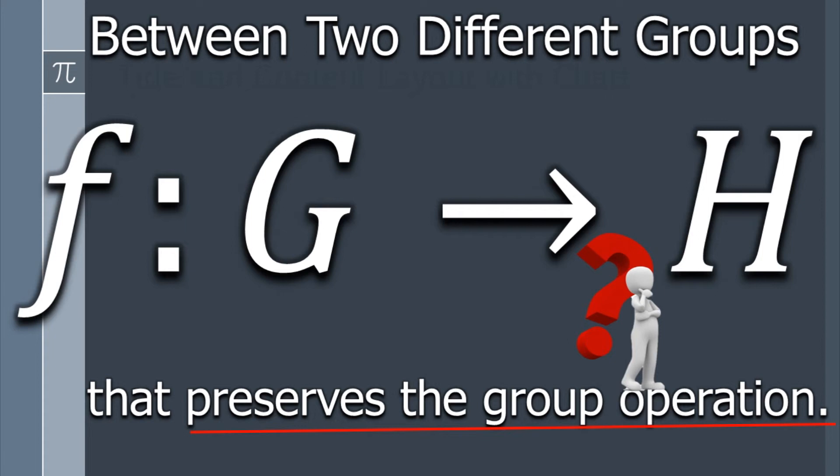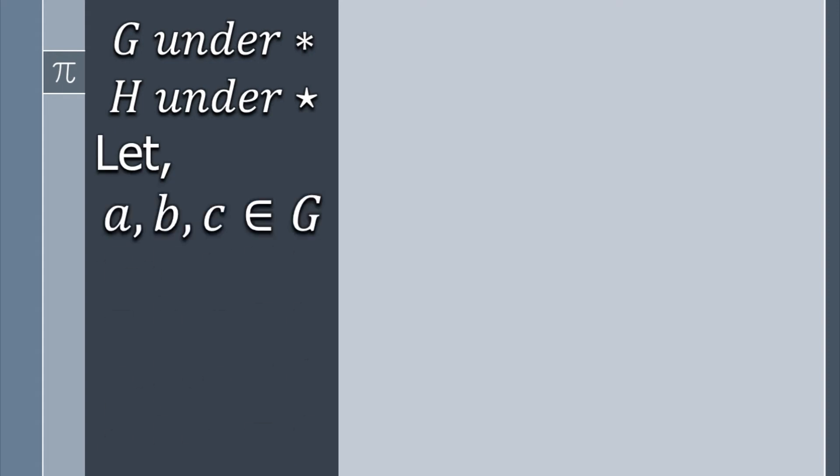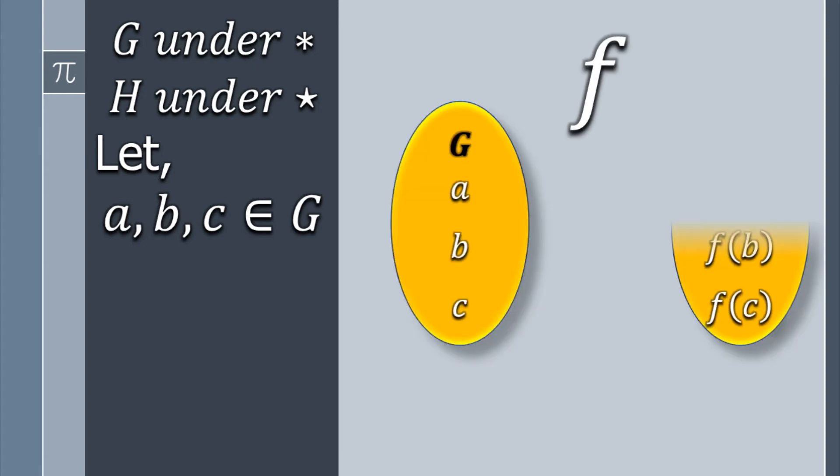Now the question is: how does a function preserve the group operation? Let's break it down. Let G be a group under ★ and H be a group under ⊛ — these are two different groups with two different binary operations. Let a, b, and c be three different elements of G, and F maps G to H.